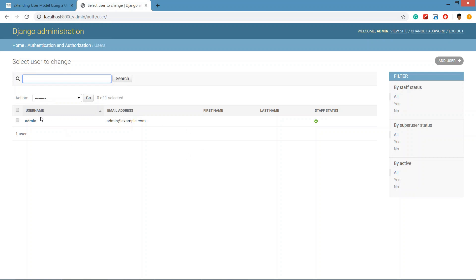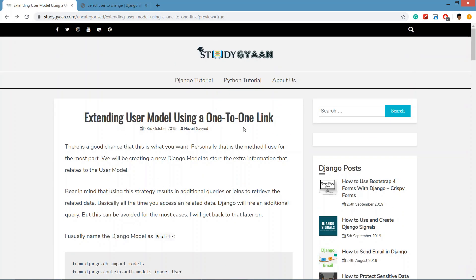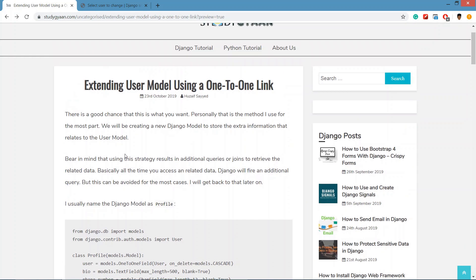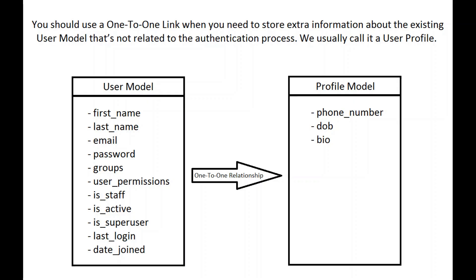We are now in Django administration. Django by default has a user model. This is the superuser we created using the command. Now we are going to extend the user model. You should use a one-to-one link when you need to store extra information about the existing user model that is not related to the authentication process.